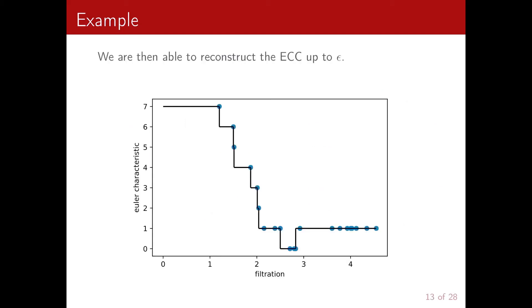So we have this list, we can simply order it by the filtration value. And we can reconstruct the Euler characteristic curve up to a filtration value epsilon, as you can see over here.